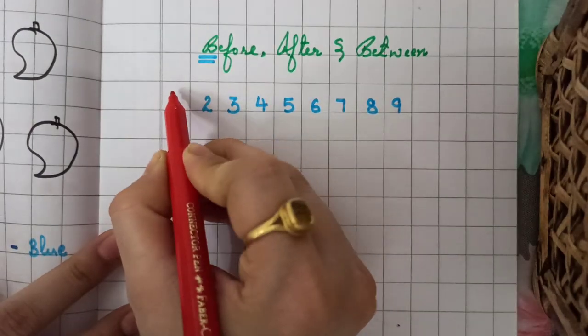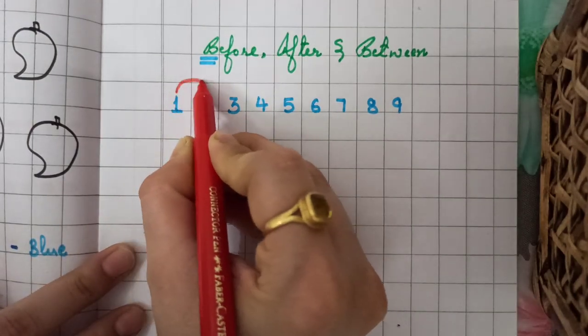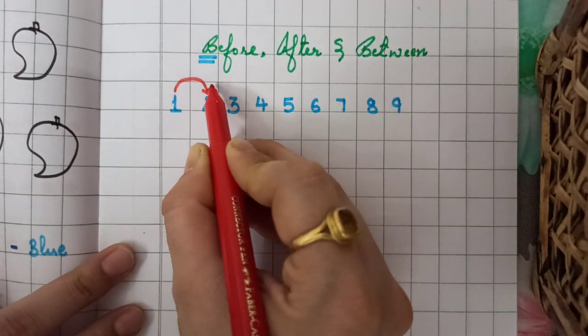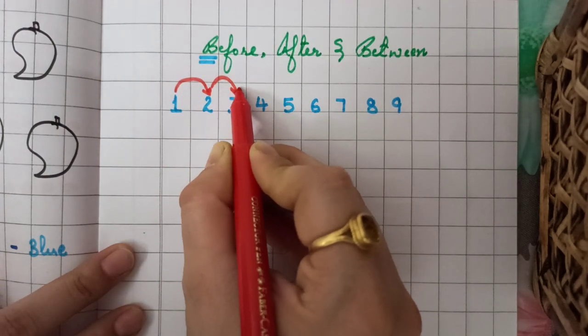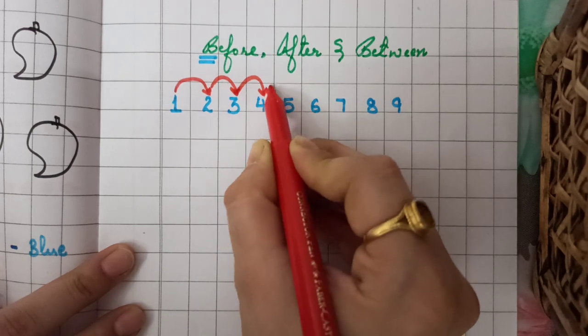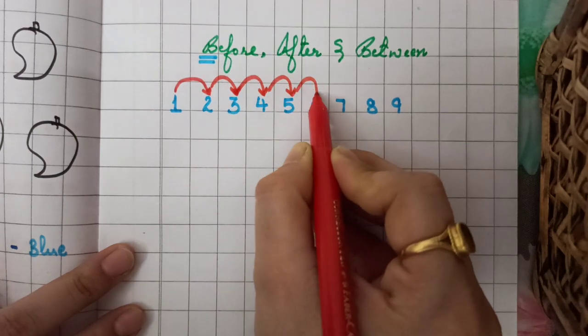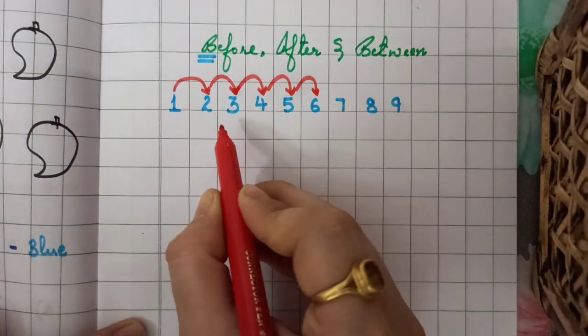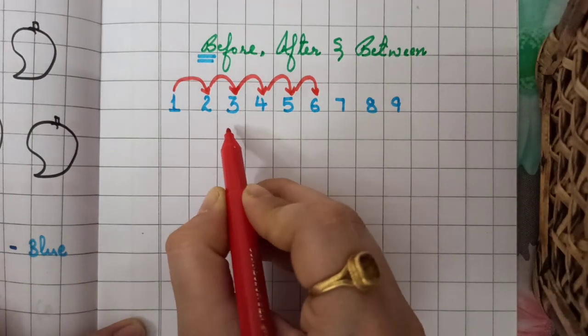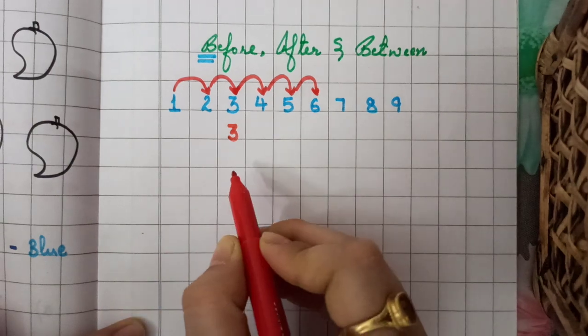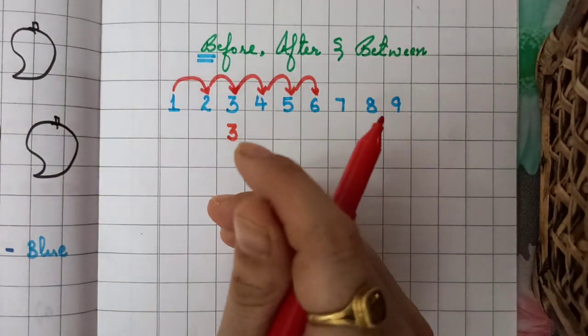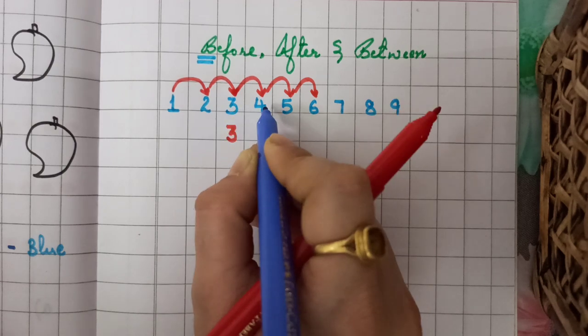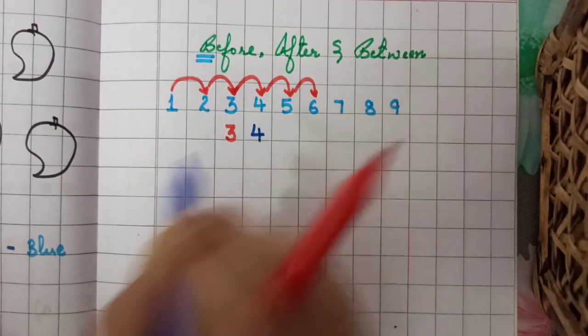So we will tell kids, see this is how we will tell them, like after 1 comes 2, right, then 3, then 4, then 5, then 6 and it will continue. Like, we will ask them what comes after 3, so what's the answer?